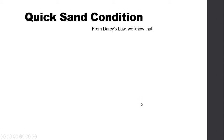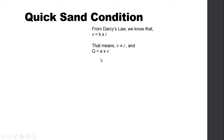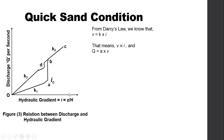From Darcy's law, which you have studied in basic soil mechanics, the velocity of flow equals the coefficient of permeability times the hydraulic gradient: v = k × i. This means velocity of flow is directly proportional to hydraulic gradient. The discharge q equals the area through which flow occurs multiplied by velocity: q = A × v. Now let us look at the graphical relationship between hydraulic gradient i = z/h on the x-axis and discharge per unit area on the y-axis.